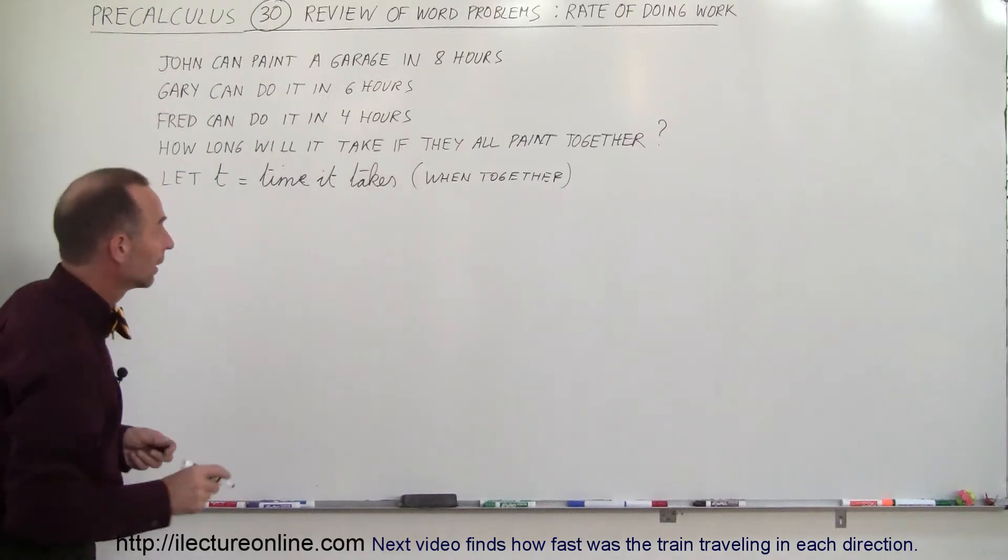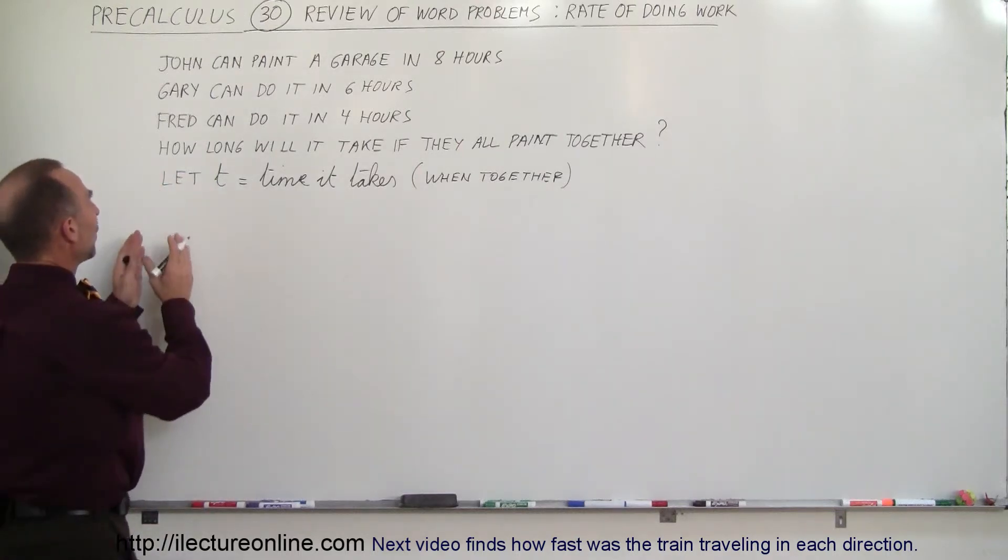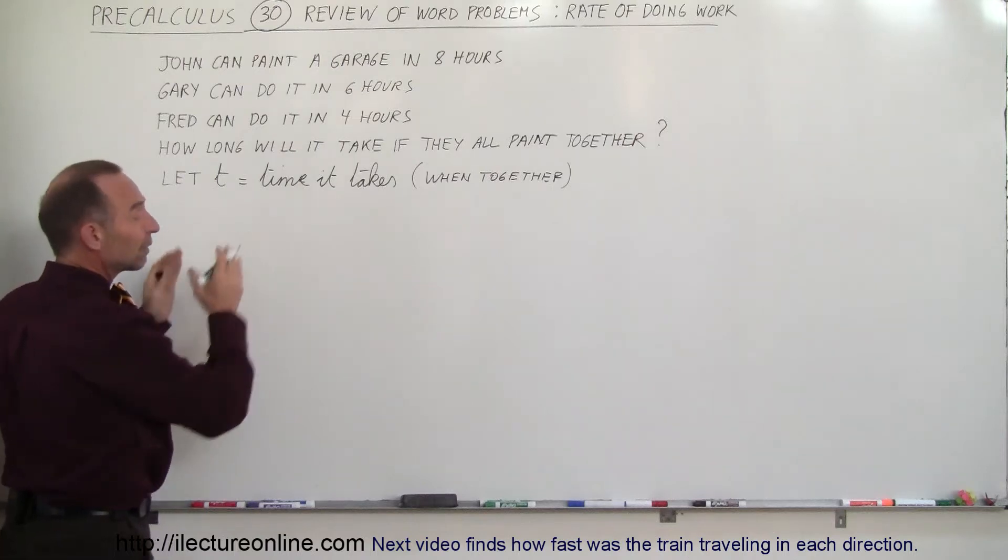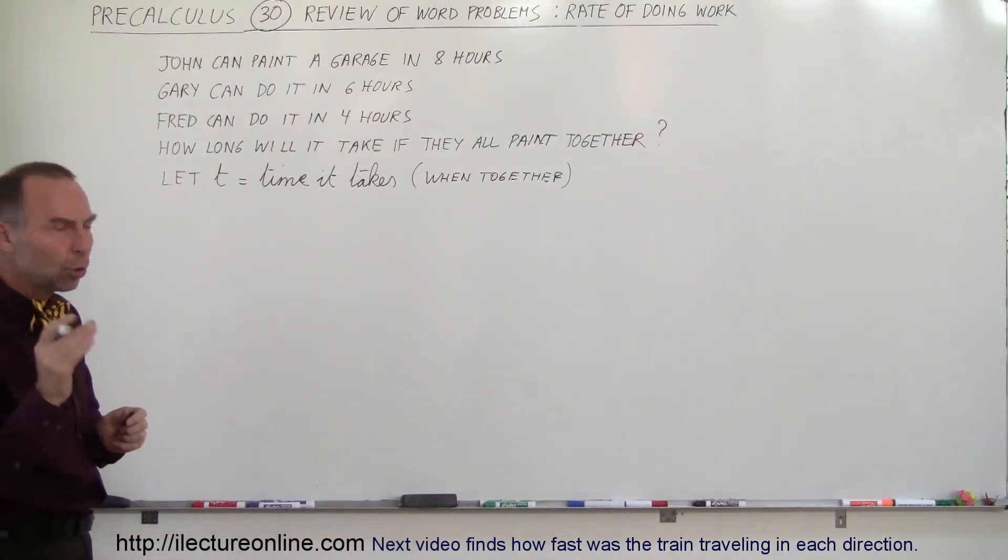Okay, now, if we multiply the rate of each painter times the time that it takes for all three of them to do it together, add all up, they'll get the whole job done.